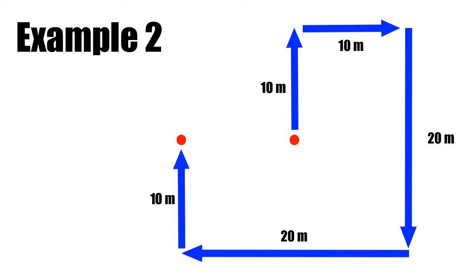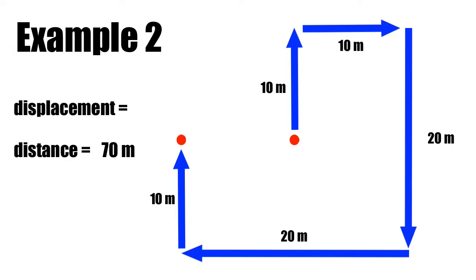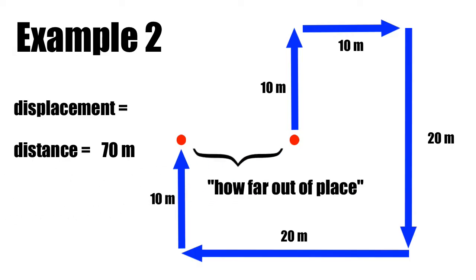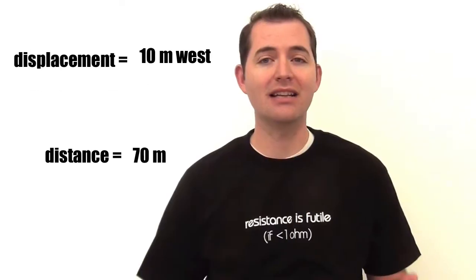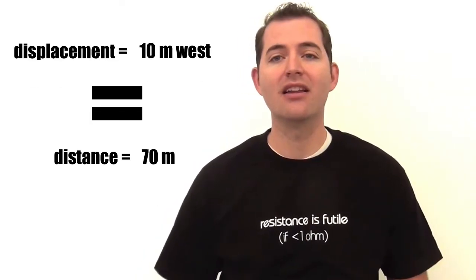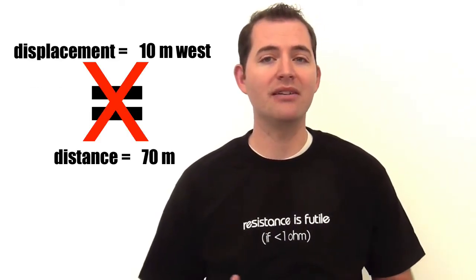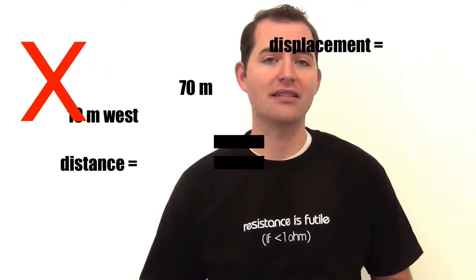If we're calculating the distance, we're looking at how much ground the object has covered, and in this case it's 70 meters. But if we're looking at the displacement — how far out of place it is — in this case it's only 10 meters to the west. Again, when we compare the displacement and the distance, those are very different numbers and mean very different things.